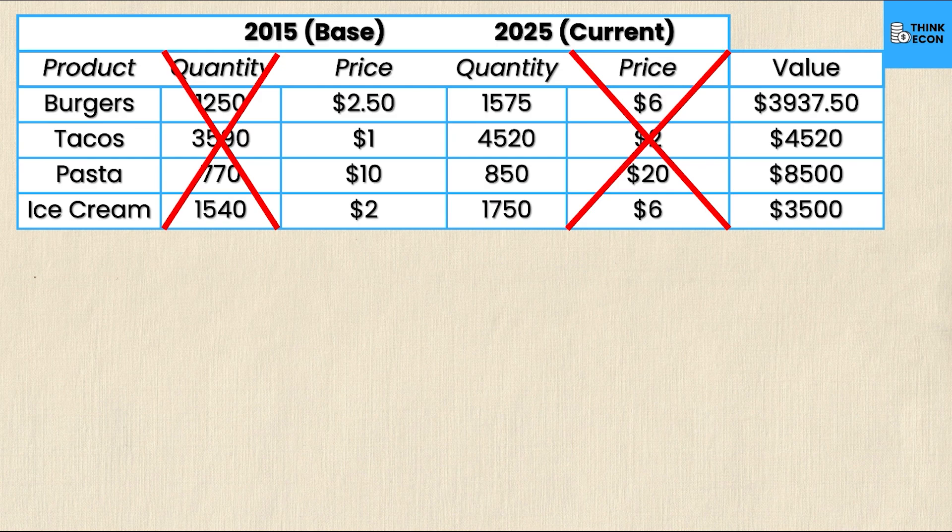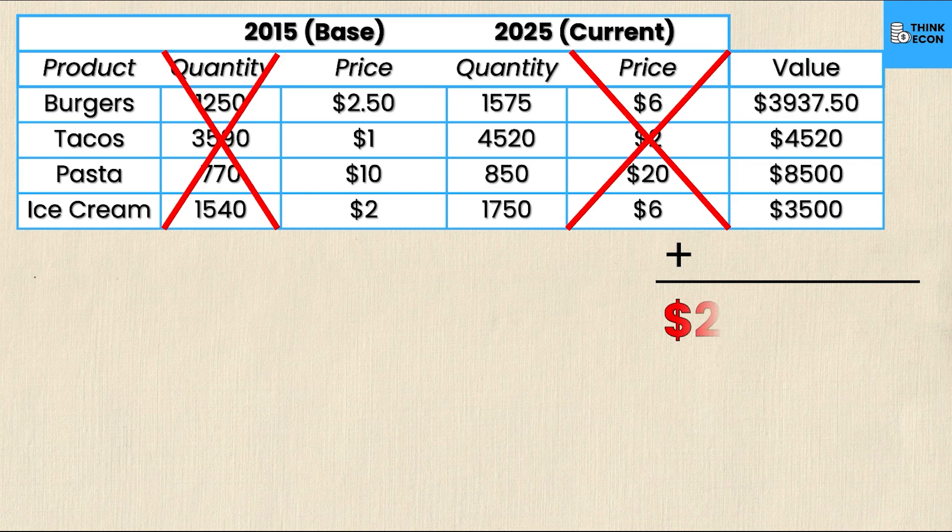Once you have all your values by multiplying price times quantity for those two years, you sum them all up. In this case the total real GDP is $20,457.50.